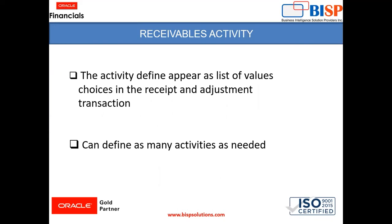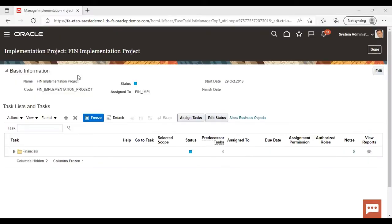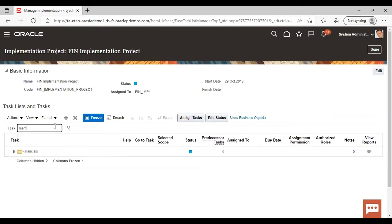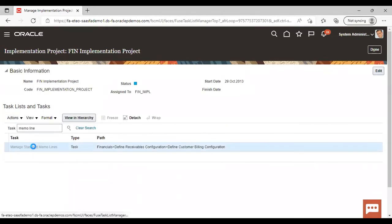When we define an activity, it appears as a list of value choices in the receipt and adjustment transaction. So this is the Receivable Activity. Now we will move to the application and see how to create the standard or memo lines and the Receivable Activity. Moving to the application — to create a memo line, go to task and search for memo line.